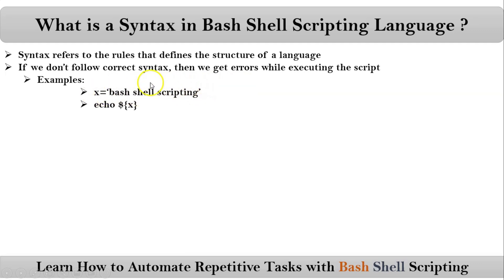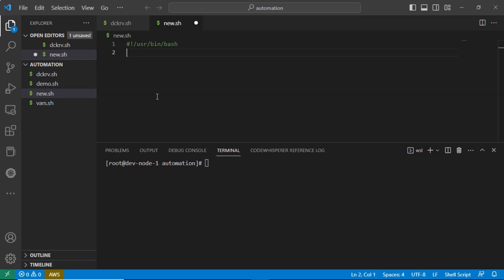So finally, this is one syntax to define a variable. Same way, if you want to display a variable value, this is another syntax. Now let me show you — suppose if you don't follow the correct syntax, what will happen while executing the code?